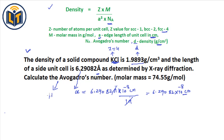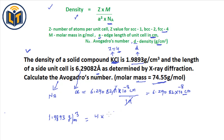The molar mass of potassium chloride is given as 74.55 grams per mole. Now we plug values into the density formula: 1.9893 g/cm³ equals z equals 4 for FCC, multiplied by molar mass 74.55 grams per mole, divided by a-cubed times N_A.